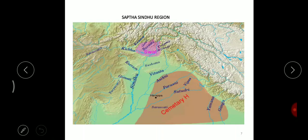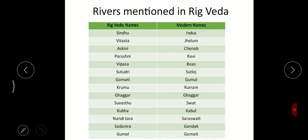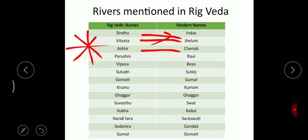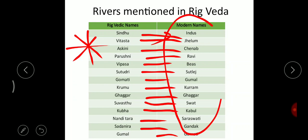The Sapta Sindhu region includes rivers with Rigvedic names and their modern equivalents: Sindhu is the present-day Indus, Askeni is the Jhelum, Purushni is the Ravi, Vipasa is the Beas, Satudri is the Sutlej, Gomati is the Gumal, Krumu is the Kurram, Gagar remains Gagar, Suvastu is the Swat, Kuba is Kabul, Nanditara is Saraswati, and Sadanira is the Gandak.